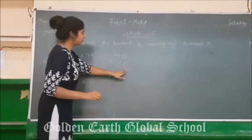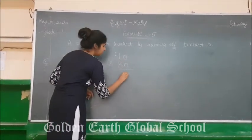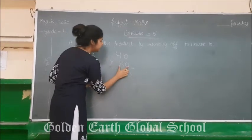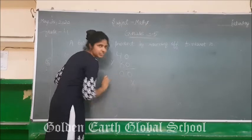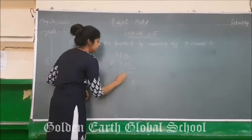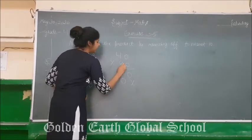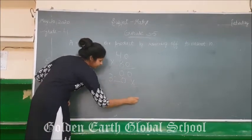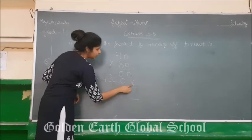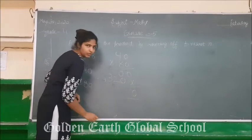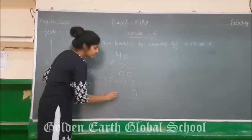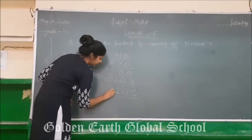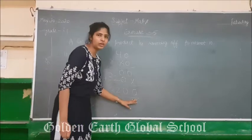Working out 40 × 80: 0 multiplied by 0 is 0; 0 multiplied by 4 is 0. Then 8 multiplied by 0 is 0; 8 multiplied by 4 is 32. Adding all the numbers: 0, 0, 2, 3. So the final answer is 3,200.